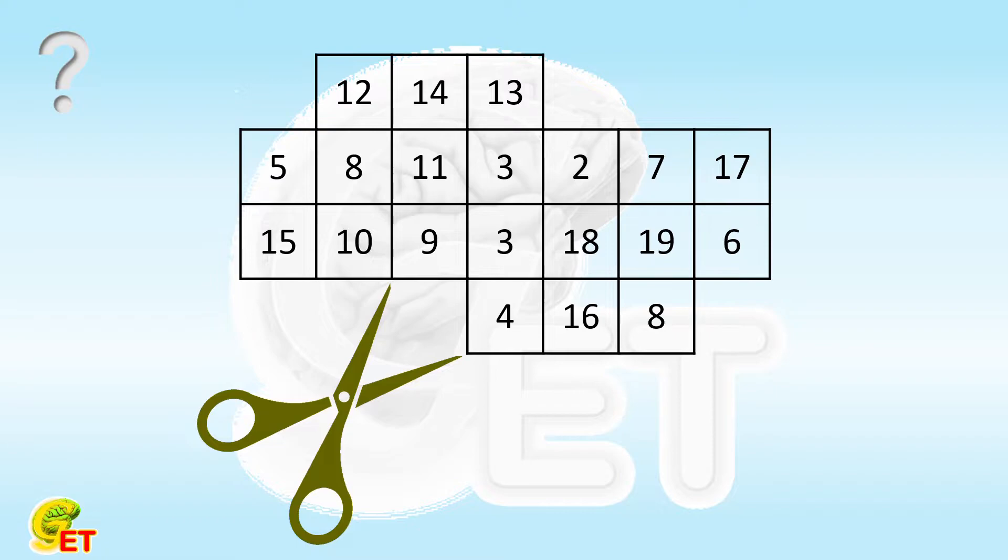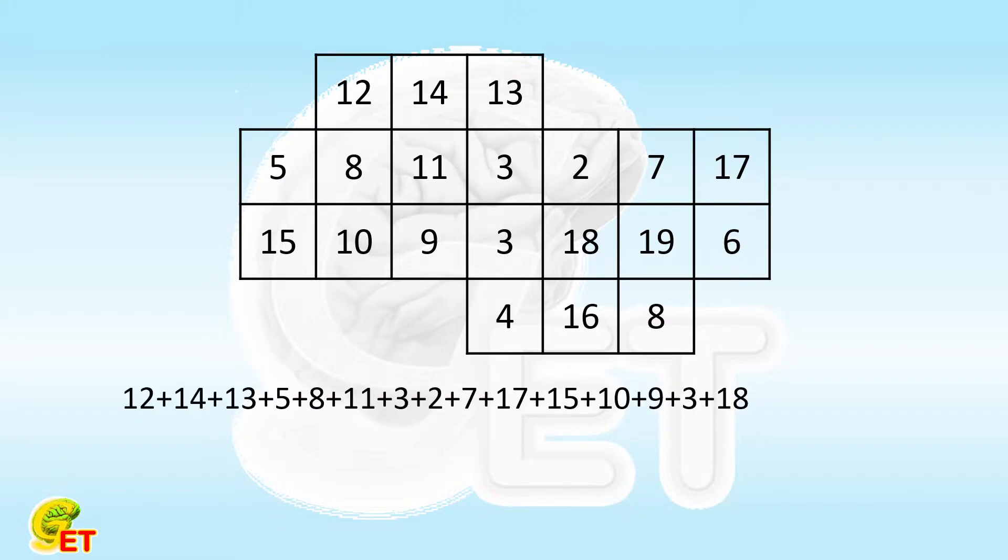It's not difficult to cut this grid into four parts with identical shape, but the real challenge is to make the summation of all the numbers in each part the same. Therefore, we'd better start with the summation of those numbers. We first calculate the summation of all 20 numbers and find that it equals 200, so the summation of all numbers in each part should be 50.